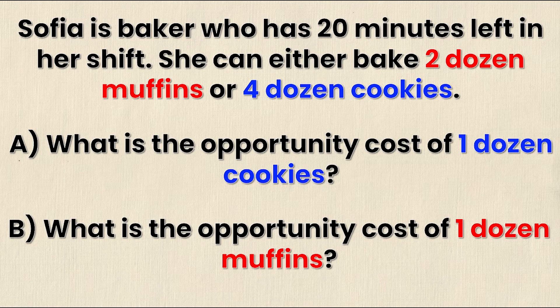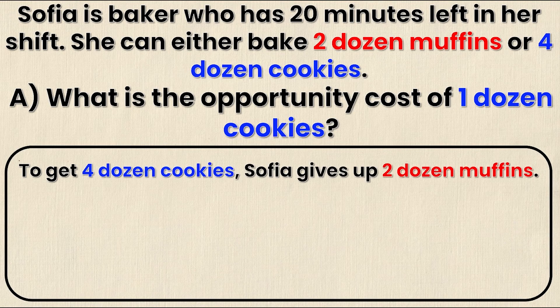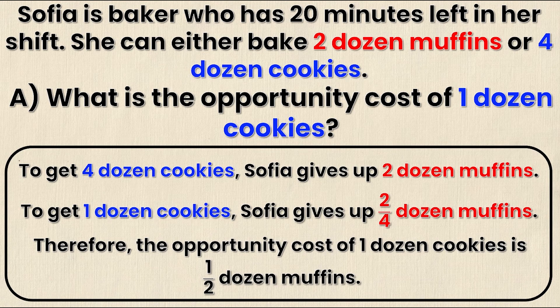Let's look at part A first: what is the opportunity cost of one dozen cookies? Based on the problem, to get four dozen cookies Sophia must give up two dozen muffins. But we care about one dozen cookies, not four, so we divide both sides by four. To get one dozen cookies Sophia must give up two over four dozen muffins, which simplifies to one half. Therefore the opportunity cost of one dozen cookies is half a dozen muffins.